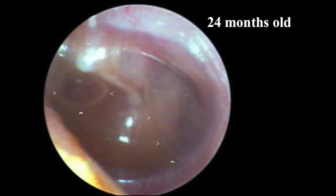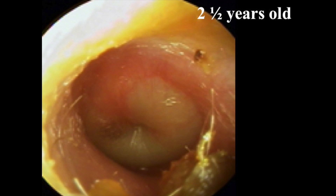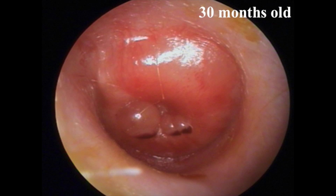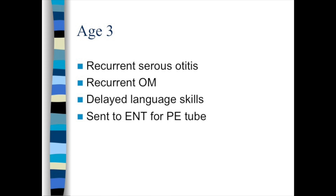We follow this child. At the 24-month-old check, there's a fluid level and an air bubble — serous otitis. At 2.5 years old, there's a purulent middle ear effusion and the tympanic membrane has lost landmarks. At 30 months, this is a bullous tympanic membrane. By age 3, this kid has recurrent serous otitis, recurrent otitis media, and delayed language skills. He's sent to the ENT for PE tubes.